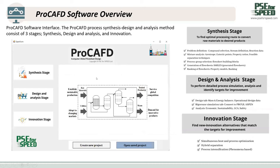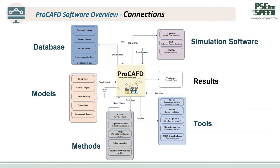This picture shows the software interface of Pro-CAFD, which consists of three stages: the synthesis stage, the design and analysis stage, and the innovation stage. This picture also shows the connection diagram of Pro-CAFD, giving an overview of how the program connects to the database, lifecycle assessment including sustainability and safety, simulation tools, property estimation, and process design. That's why Pro-CAFD is an efficient tool for the entire process design analysis.